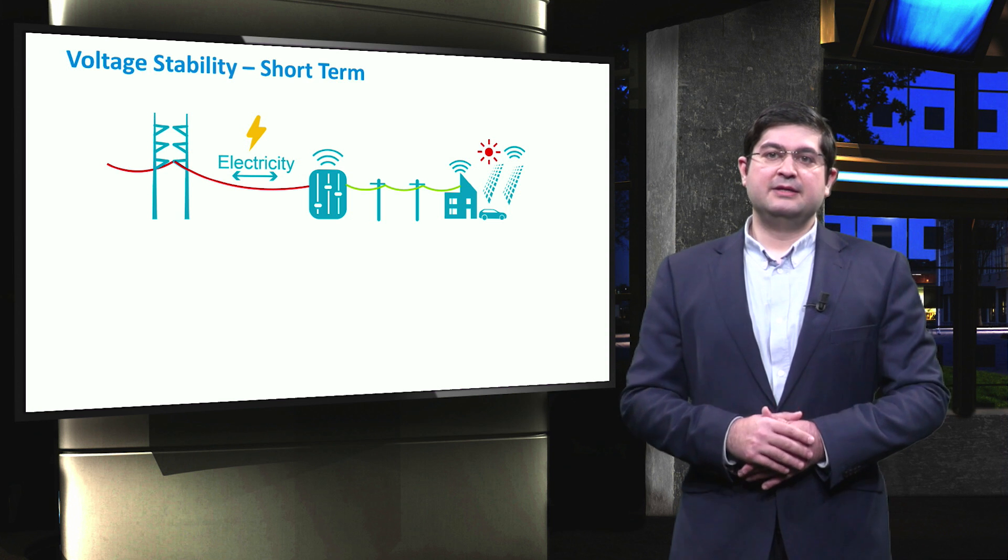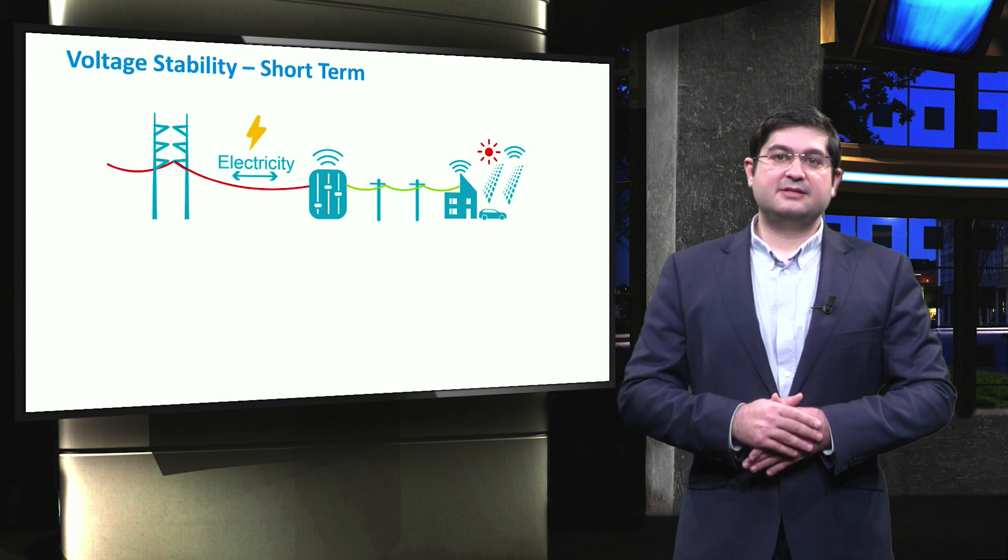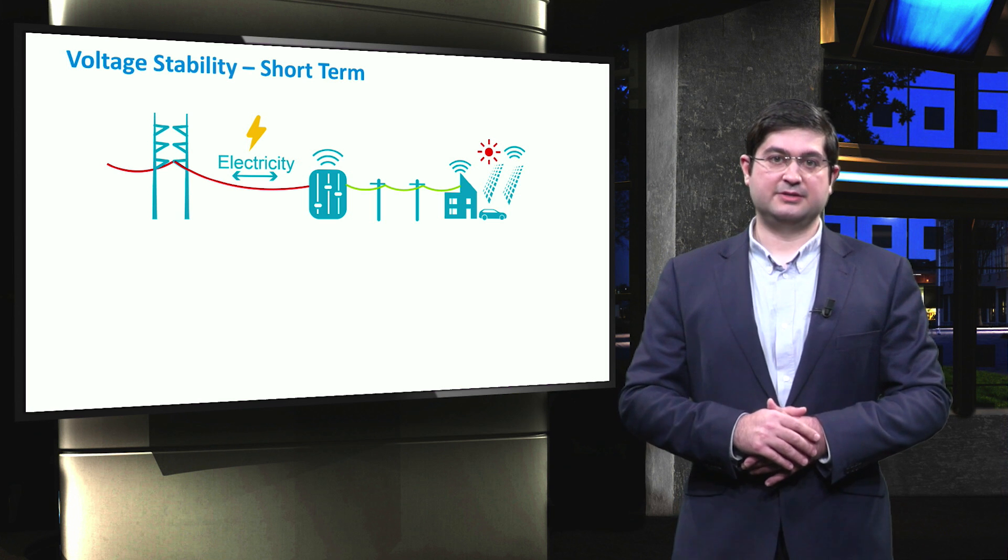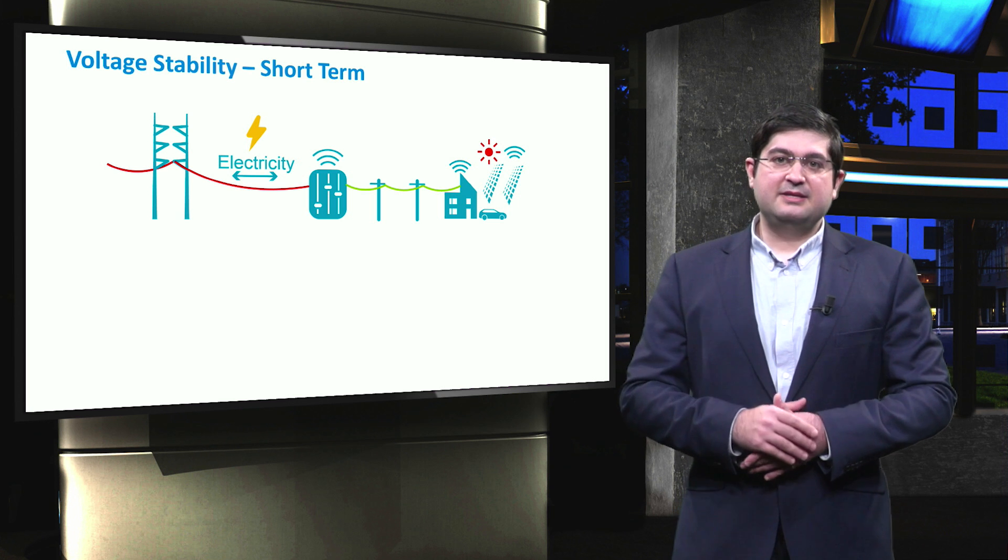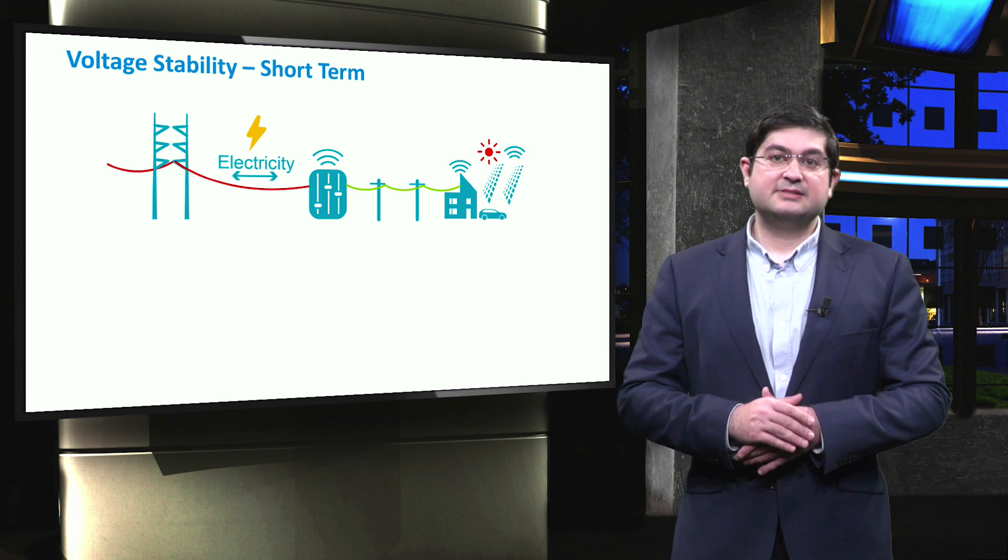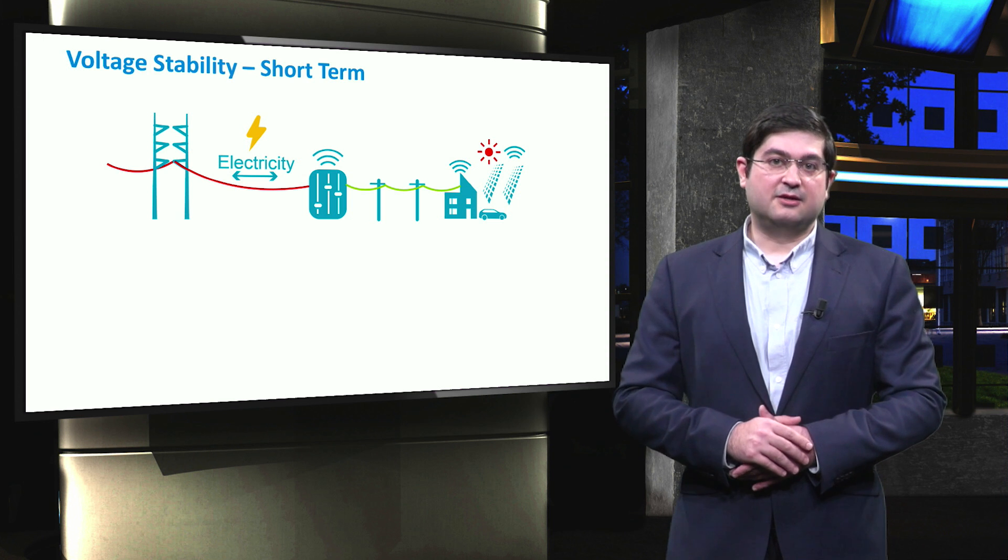However, the voltage which is a local signal can be affected by the operation of microgrid. In other words, only the voltage stability can be classified and addressed when a microgrid is connected to the external grid.